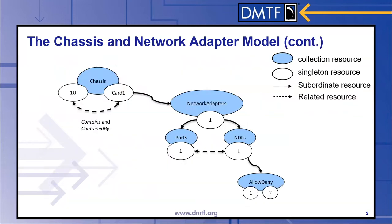From a resource diagram perspective, on the left we have our chassis collection with two members: a chassis called "1U" and a chassis called "card 1." They have a bidirectional relationship showing their contains and contained-by relationship — chassis 1U contains card 1, and card 1 is contained by chassis 1U. Within card 1, we have our network adapters collection with a single network adapter, and we have ports and network device functions collections, each containing one member. There's also an optional allow-deny collection within each network device function where you can program firewalling capabilities such as IP address filtering and port filtering.